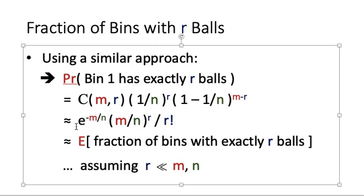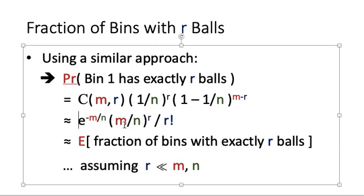This is the expected fraction of bins with exactly r balls. Notice that we have an interesting term: e to the power minus m over n, multiplied by m over n to the power r, divided by r factorial. The term m over n is actually the expected number of balls in each bin.